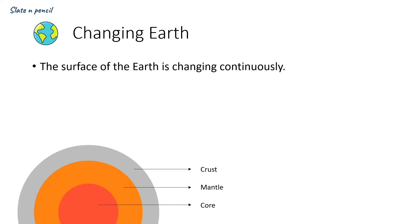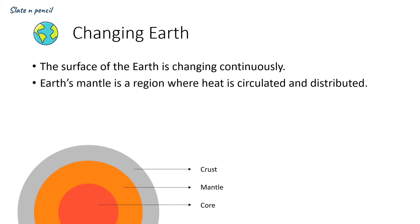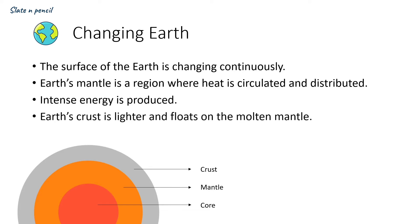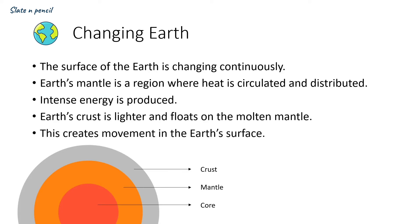The Earth's surface is changing continuously — even when you are watching this video, the Earth's surface is changing somewhere. Earth's mantle is a region where heat is circulated and distributed. Intense energy is produced, and due to this, Earth's crust floats on the molten mantle. It is also lighter in weight, and this creates movement in the Earth's surface.